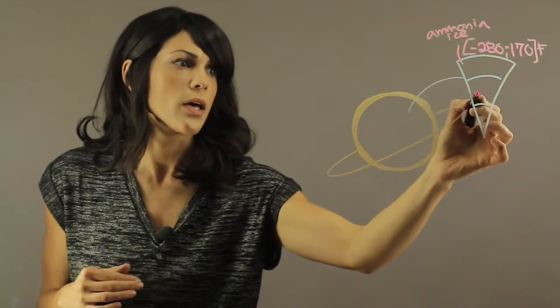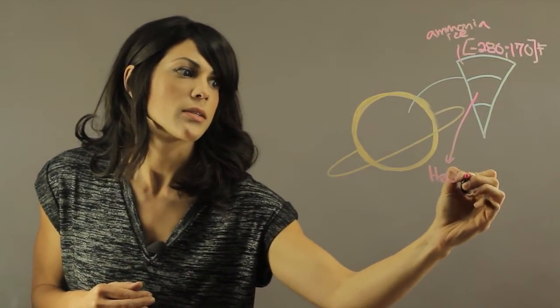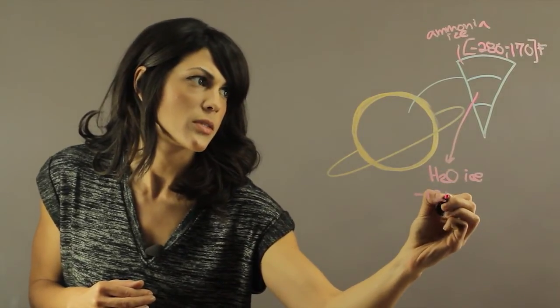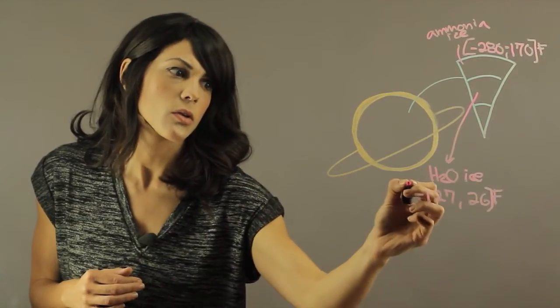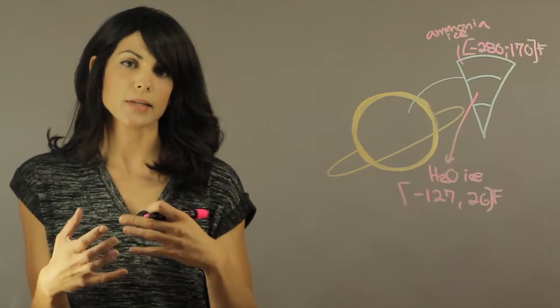Then you move lower and you have a water ice layer and that's between minus 127 to 26 degrees Fahrenheit. So as you can tell, you're moving towards the inside of the planet and the planet is getting warmer.